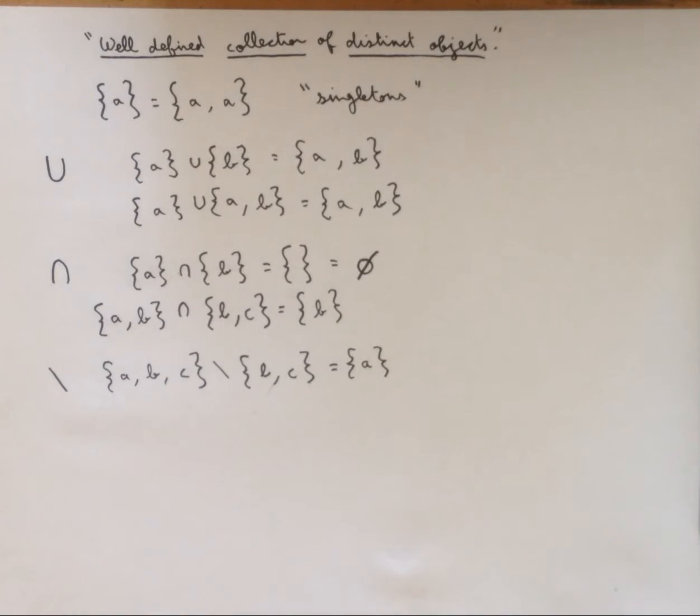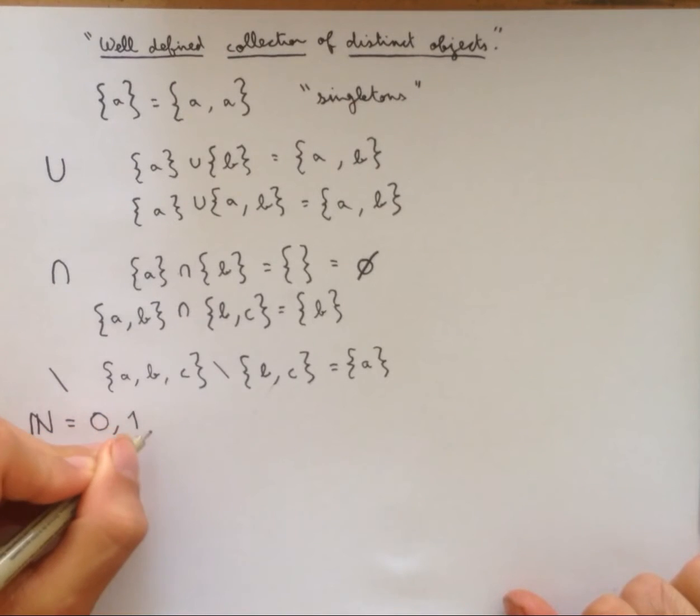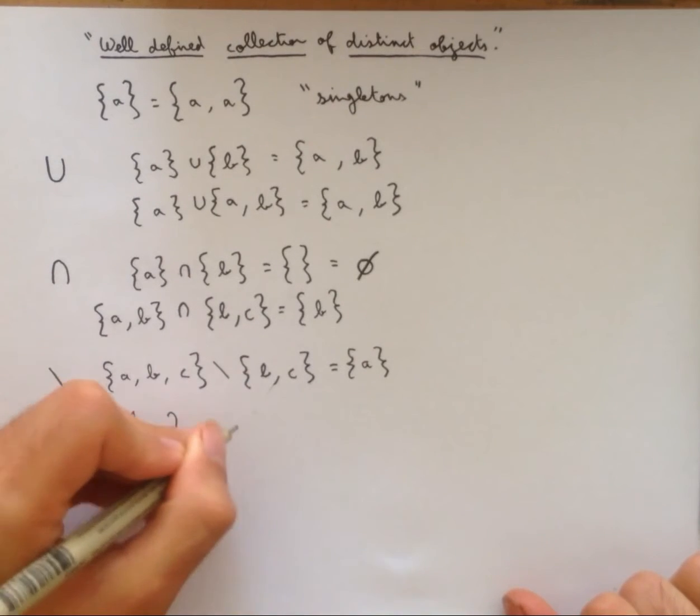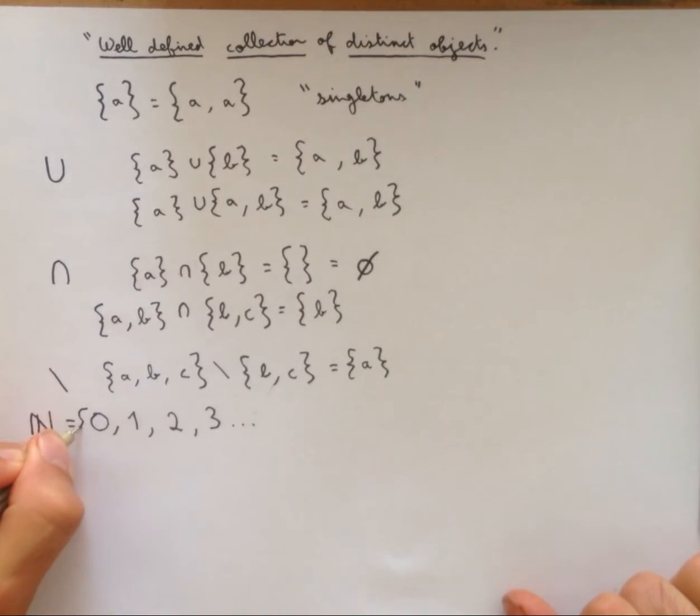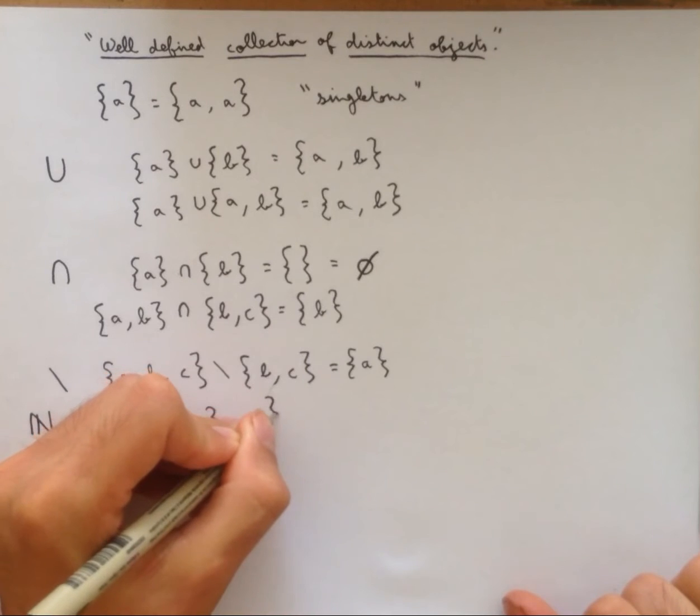Now that we have these operations defined, we can create some sets that are used very frequently in math. The first is the natural numbers. Now I'm not going to define this set very precisely. I will include a link to a more precise definition. But you will understand what I'm talking about. And the natural numbers is a set containing zero, it contains one, it contains two, it contains three, and so on. And so this is all put together in a set.